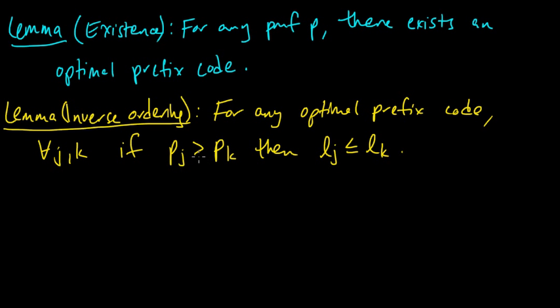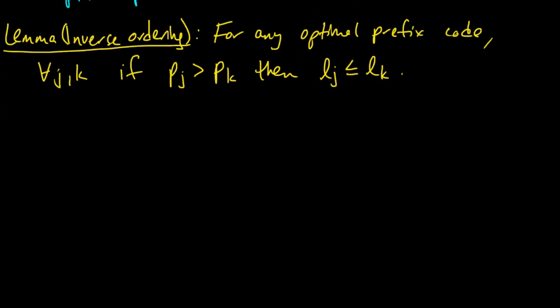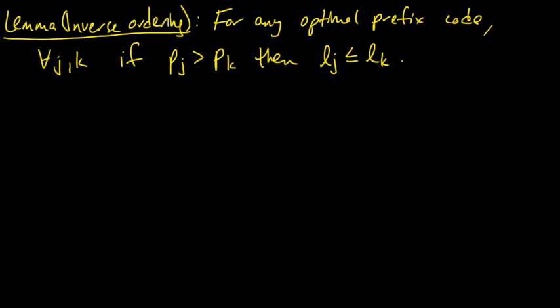And it's actually intuitively clear why this would have to be the case. Because otherwise, if the codeword for this guy were longer than this one, then you could just swap the codewords, make a new code in which you swapped those two codewords, and you would have a code with shorter expected length. So that seems intuitively clear, but let's actually go ahead and write down the proof of it, just to be complete.